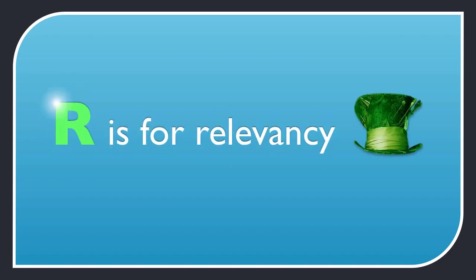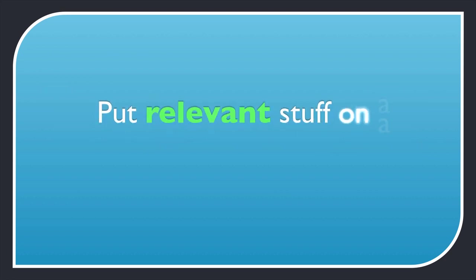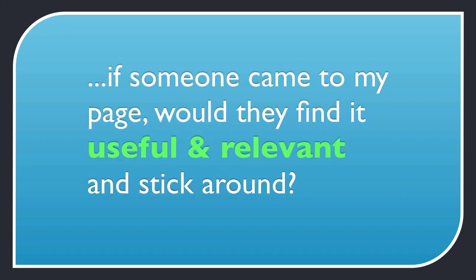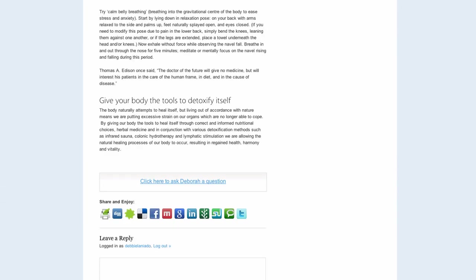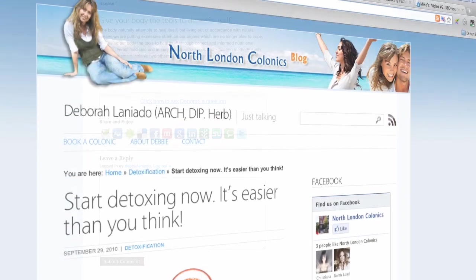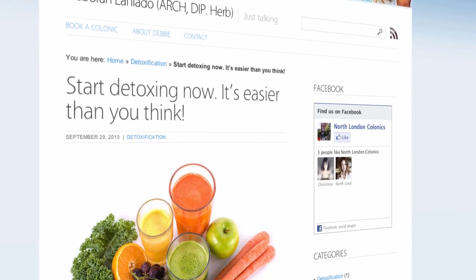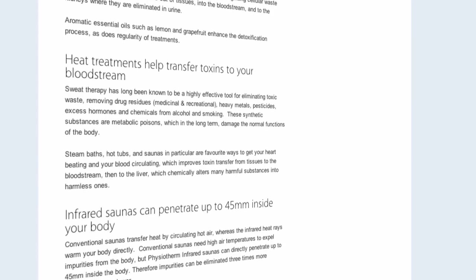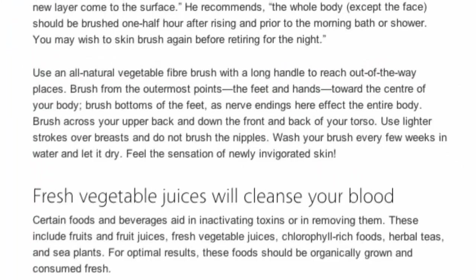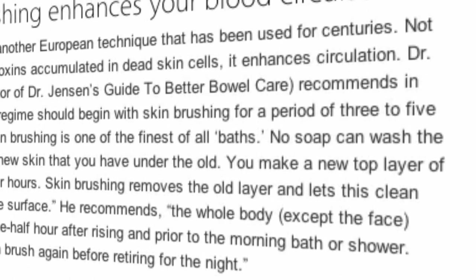R is for relevancy. Google rewards you if you're relevant, and you're relevant when you put relevant stuff on a webpage. Ask yourself: if someone searched for this keyword and came to my page, would they find it relevant to their search and stick around? Google monitors how long visitors stick around for. Debbie's post is quite long, but it's 100% relevant to the subject of detoxing your body. A rough rule of thumb is that a blog post only needs to be between 400 to 600 words, but Debbie's enthusiasm for the subject shines through, and this post contains some excellent natural keyword-rich copy. She'll also probably start ranking well for hundreds of long-tail keywords — combinations of her target keywords that we can't even think of, which means more traffic.